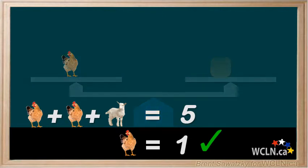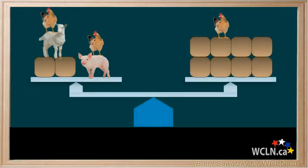Let's go for an even tougher one. We have the whole farm here on the scale — goats climbing on the blocks and chickens landing on everything. So the question is, how much does a pig weigh in blocks? Can you think of the answer? Pause if you want to give this a try. Let's use our methods of simplifying the situation. What can we do to get the pig by itself on the left side and still keep everything balanced?